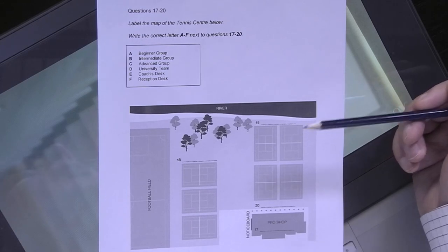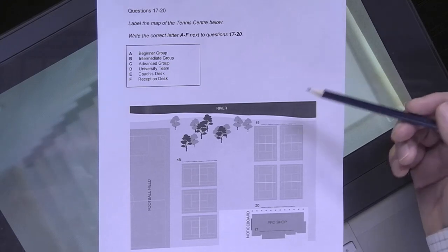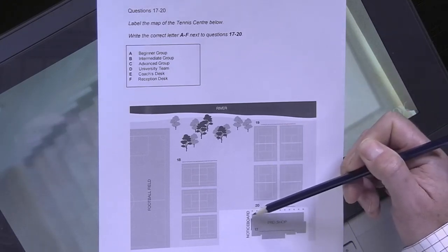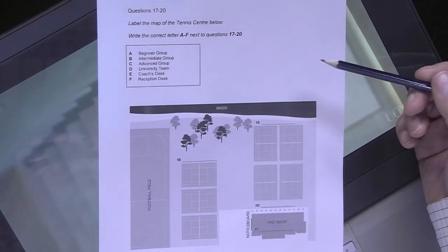You should also check what is already labelled and identify which labels are missing. And then, naturally, you should look at the options that you're given.